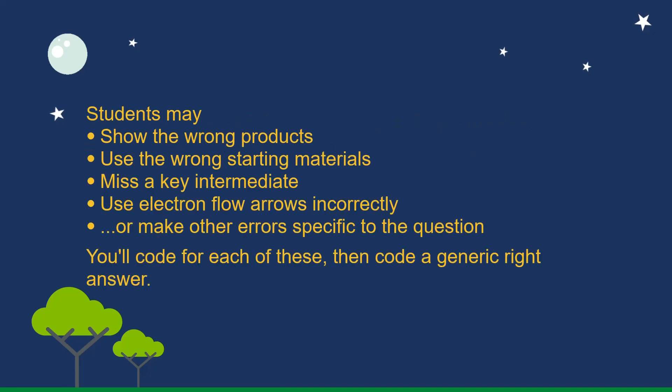Students may show the wrong products, use the wrong starting materials, miss a key intermediate, use electron flow arrows incorrectly, or make other errors specific to the question. You'll code for each of these, then code a generic right answer.